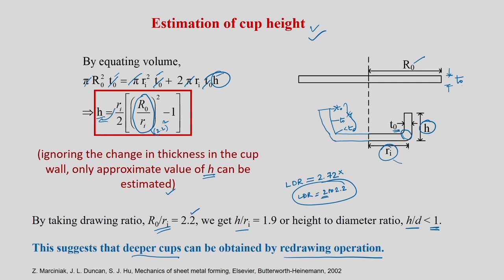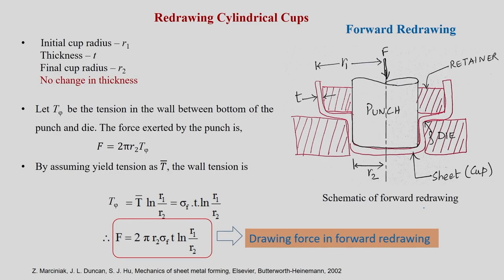h/d < 1 indicates that deeper cups can only be obtained by redrawing operations. Redrawing means the drawn cup is further formed into another cup of different dimensions. When we go for redrawing of cylindrical cups, it can be divided into two varieties: forward redrawing and reverse redrawing, similar to forward/backward extrusion.